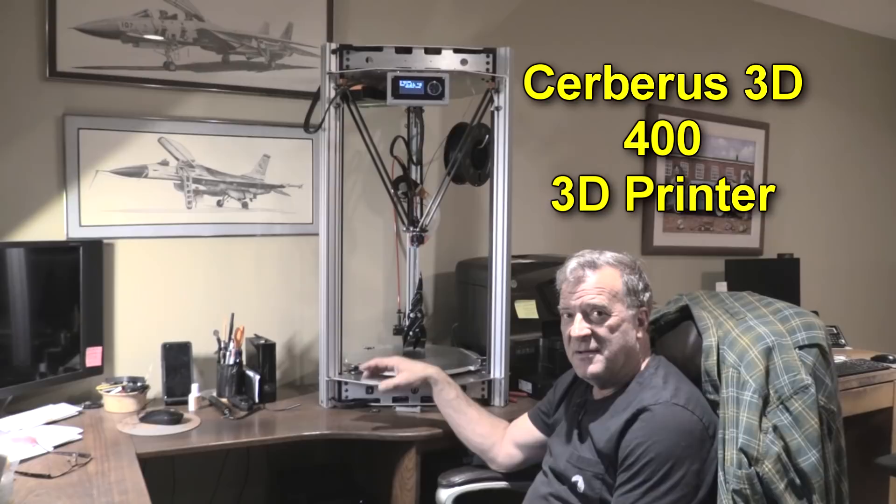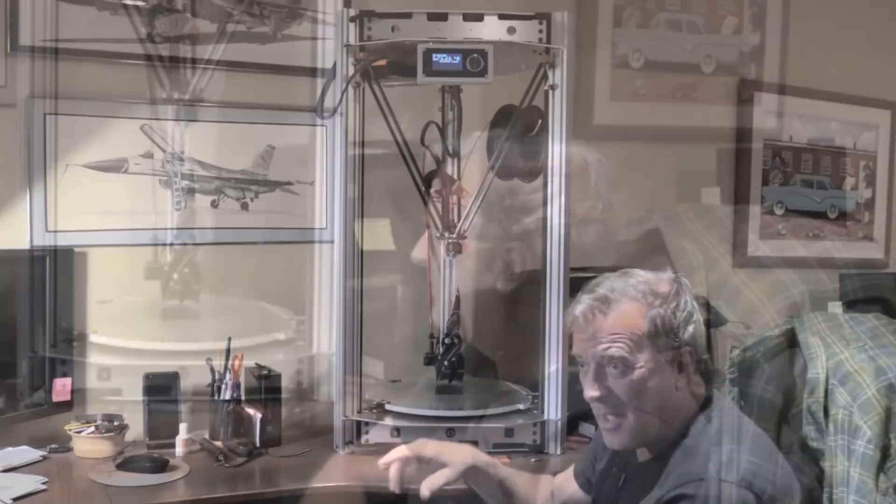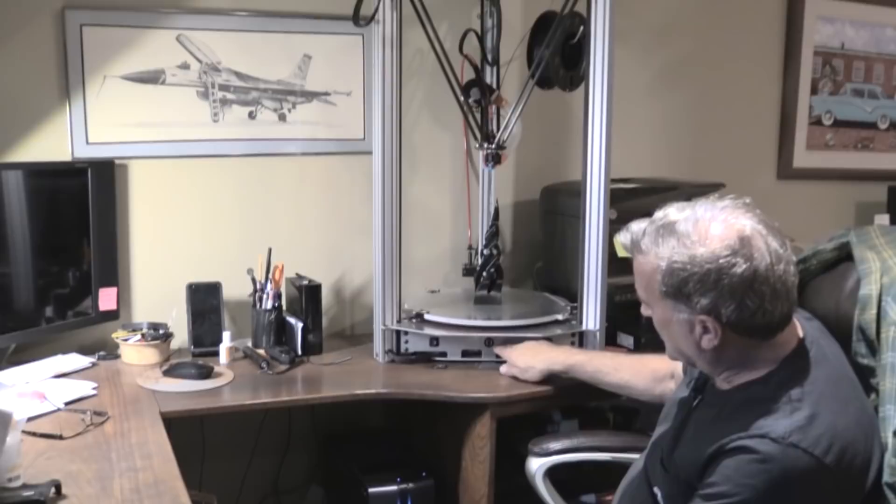Hey Kevin! What do you have there? Well, this is my new Cerberus 3D 400 series 3D printer. Got a few bells and whistles on it. And just to give you a quick little tour around here.